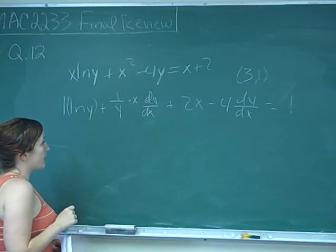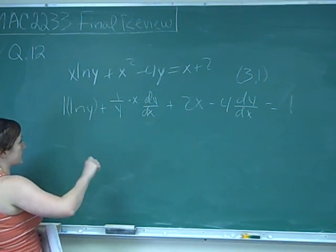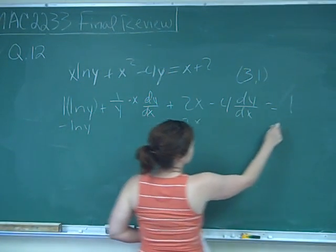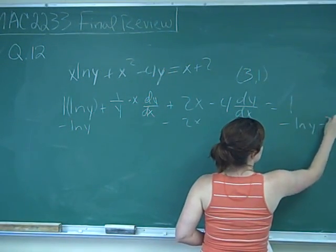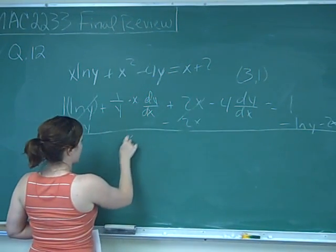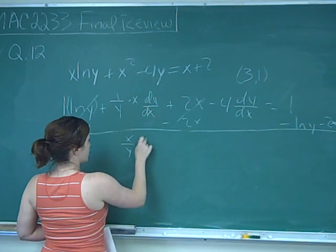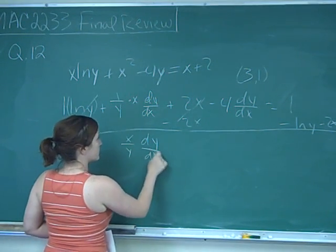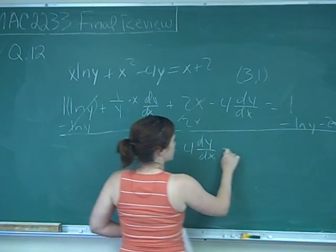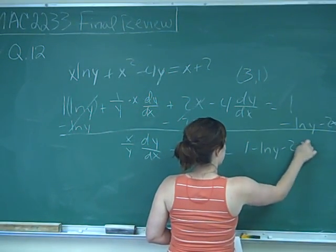So any term without dy/dx attached is going to the other side. So we're going to subtract ln y, subtract 2x, and that gives me x over y dy/dx minus 4 dy/dx is equal to 1 minus ln y minus 2x.